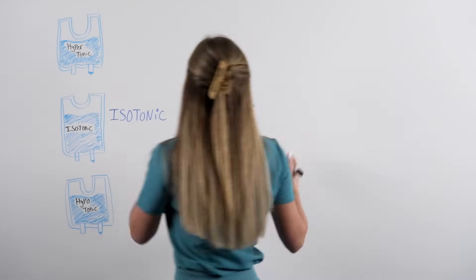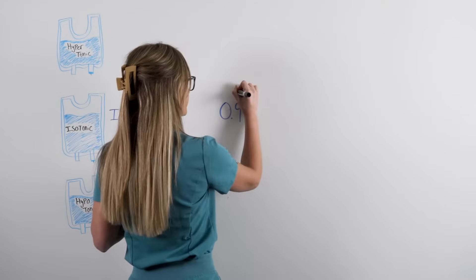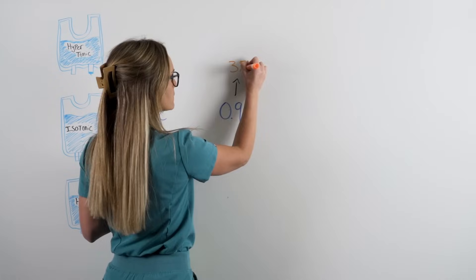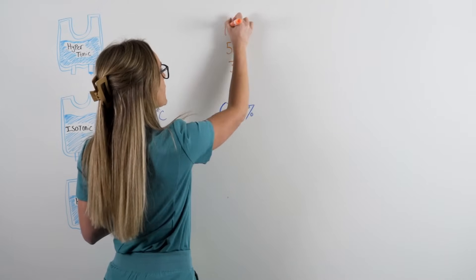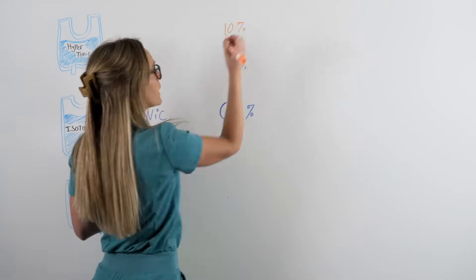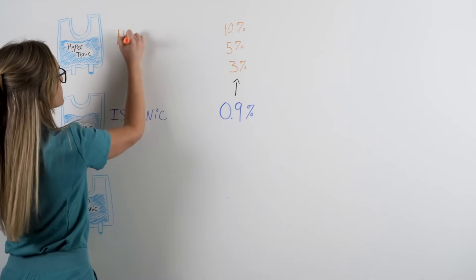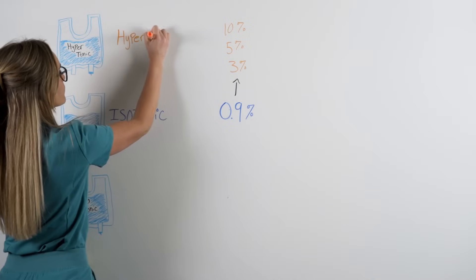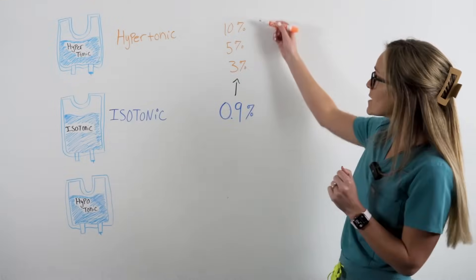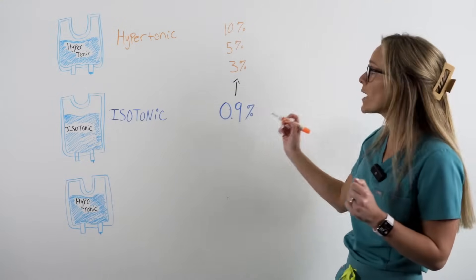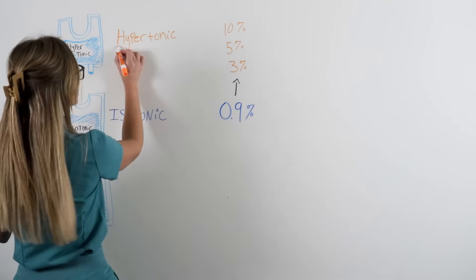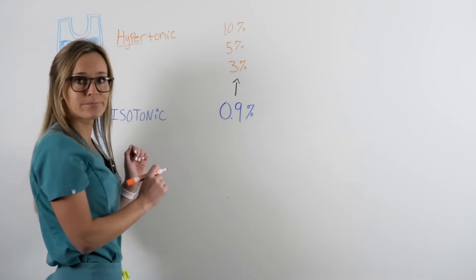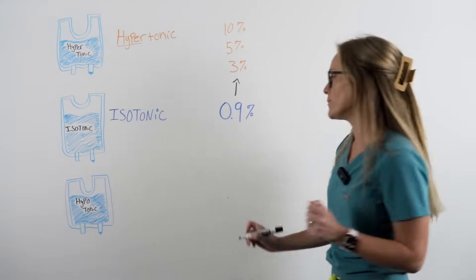Now, anything higher than this number, so these would be 3%, 5%, and 10%, these are considered hypertonic solutions. Looking at our base number of 0.9%, these numbers are higher than this, which is why it's considered a hypertonic solution. Hyper literally means high. What about things that are lower than our home base number?